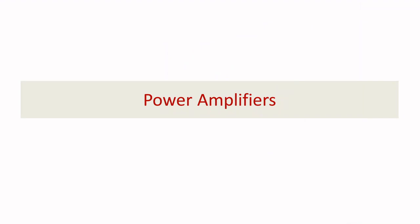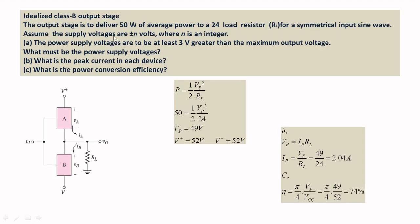Today we are going to discuss a few problems on power amplifiers — specifically Class B power amplifiers. The given power is 50 watts, the load resistor is 24 ohms, and the input is a symmetrical sine wave. The first thing we want to find is the supply voltage for the given circuit, since it is not directly given. The condition stated in the problem is that the supply voltage must be at least 3 volts greater than the maximum voltage.